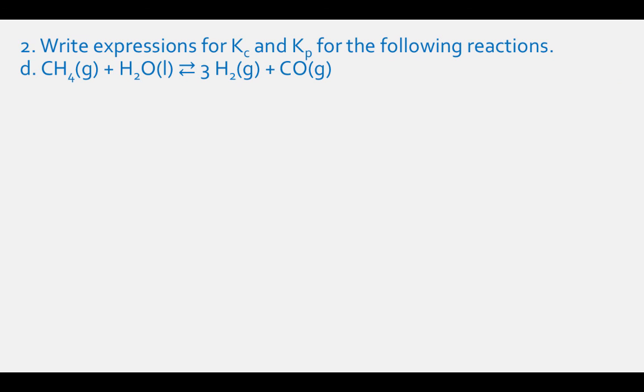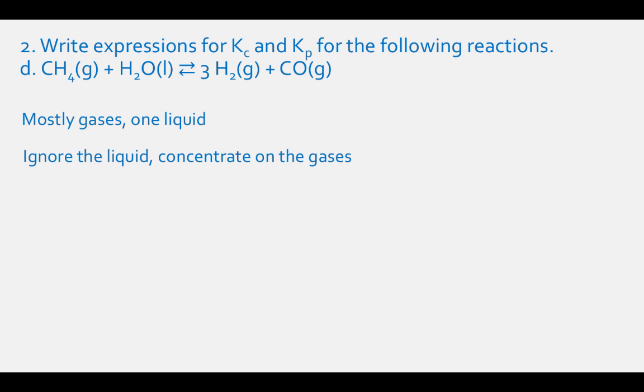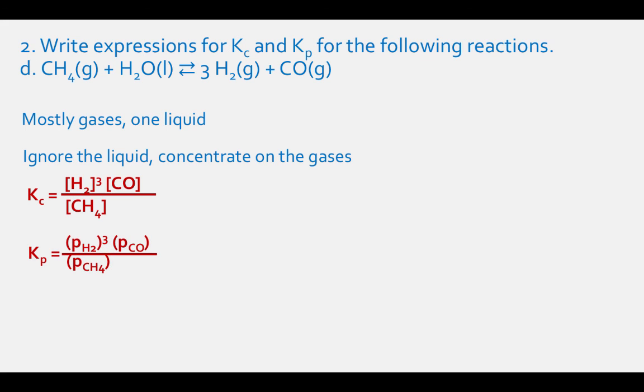For reaction (d), CH4 gas plus H2O liquid in equilibrium with 3 H2 gas plus CO gas, we have mostly gases but one liquid. We ignore the liquid and concentrate on the gases. The Kc expression is the concentration of H2 cubed times the concentration of CO, divided by the concentration of CH4. The Kp expression is the partial pressure of H2 cubed times the partial pressure of CO, divided by the partial pressure of CH4.